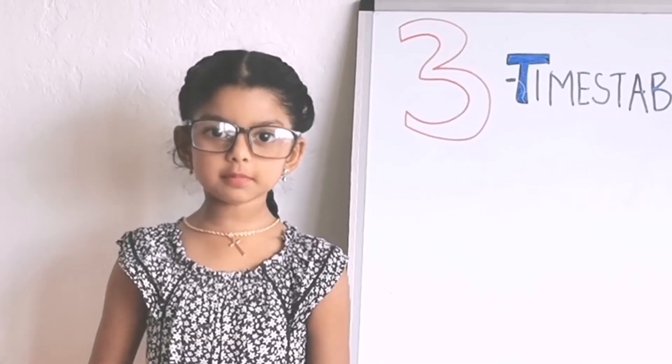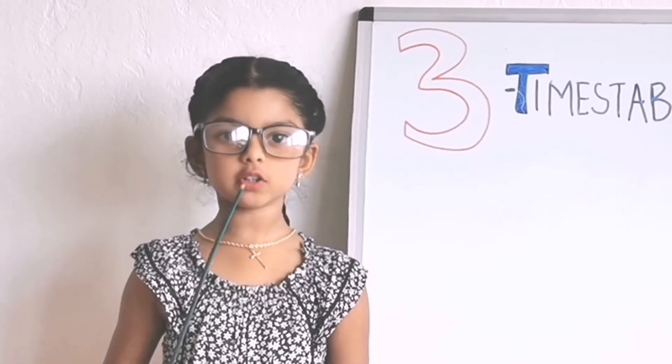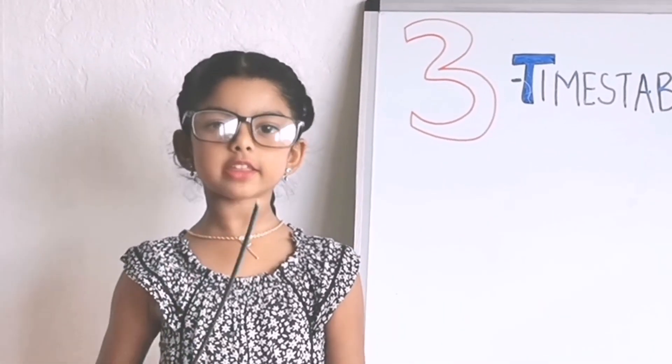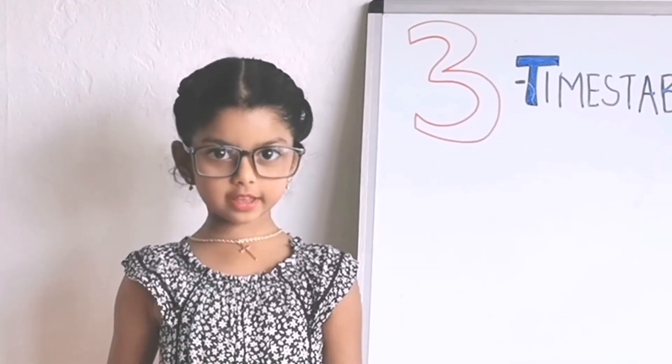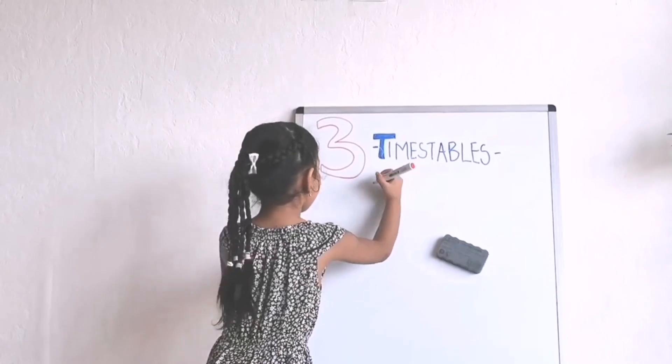I know, three times three is ten. Ten. How dumb are you? I will teach you one more time and you better know it. Look carefully.